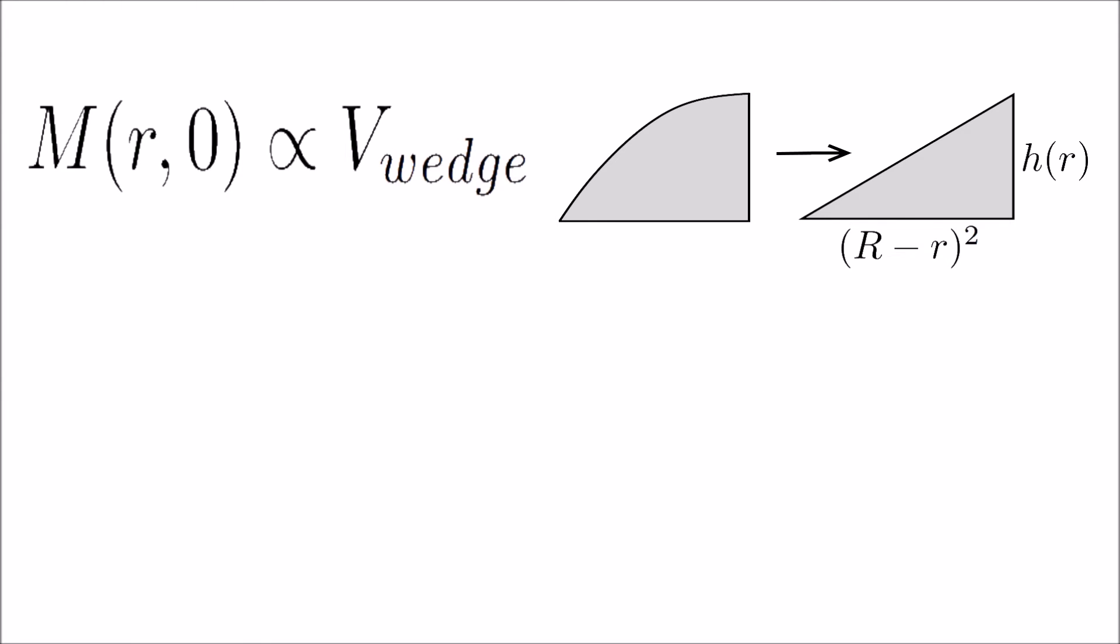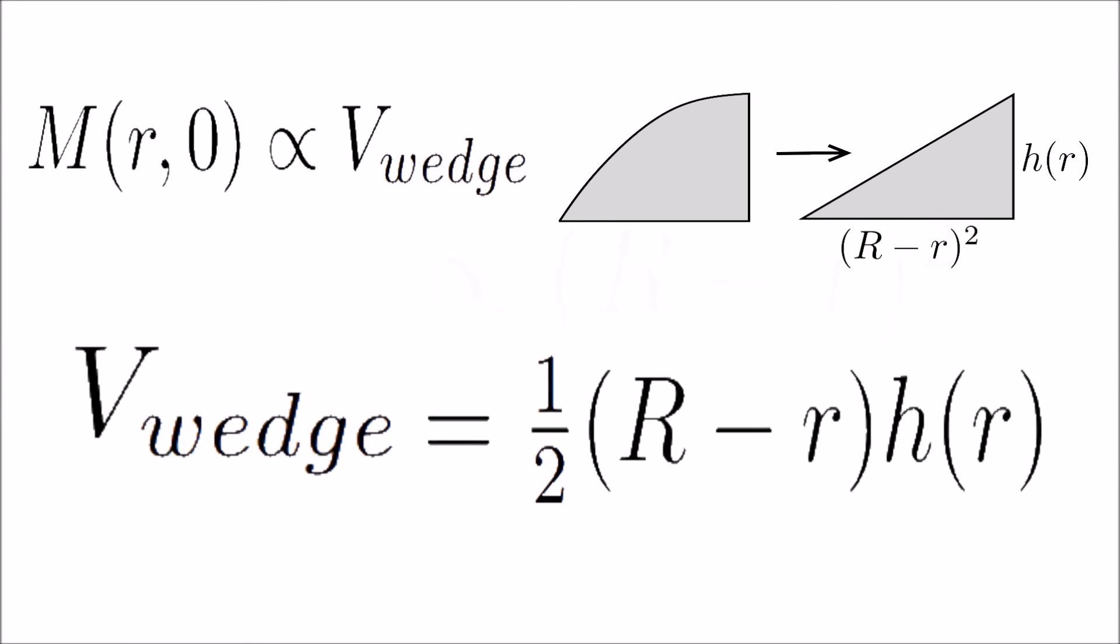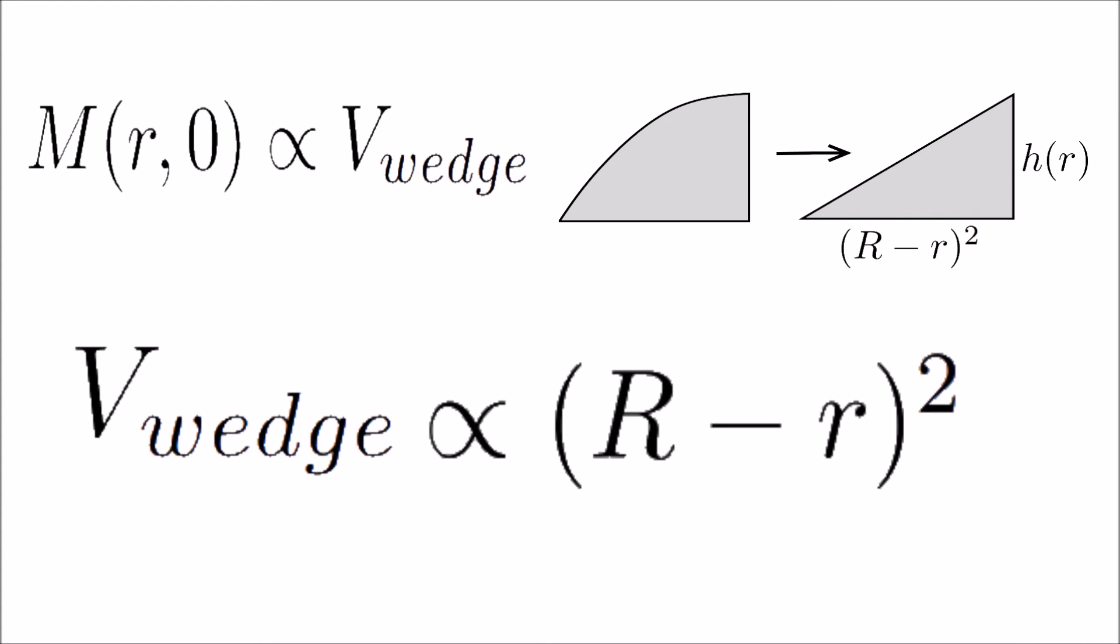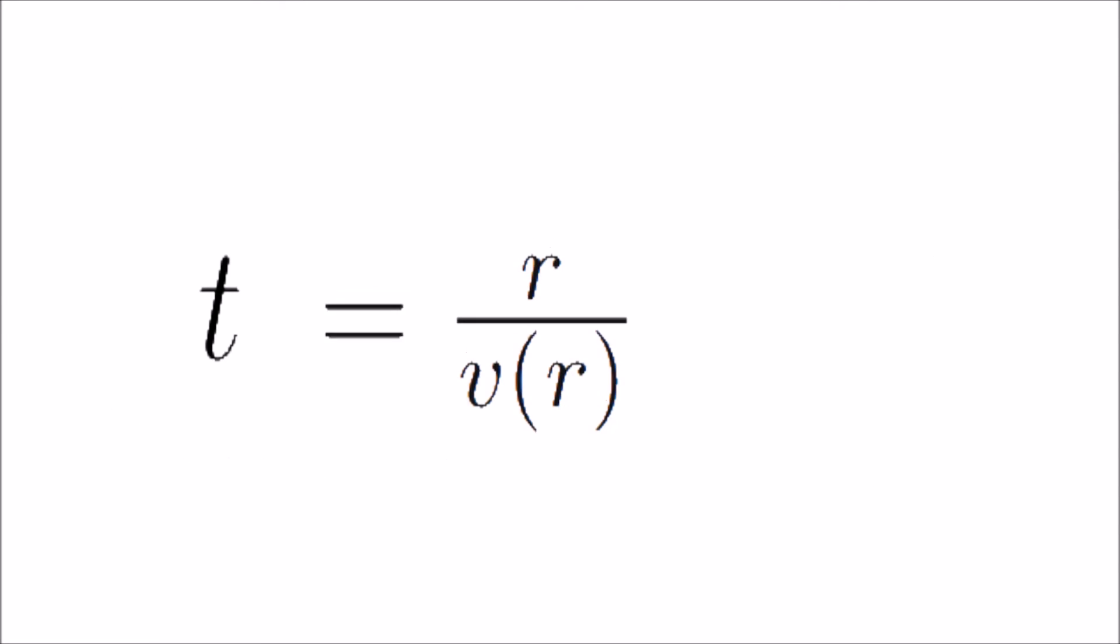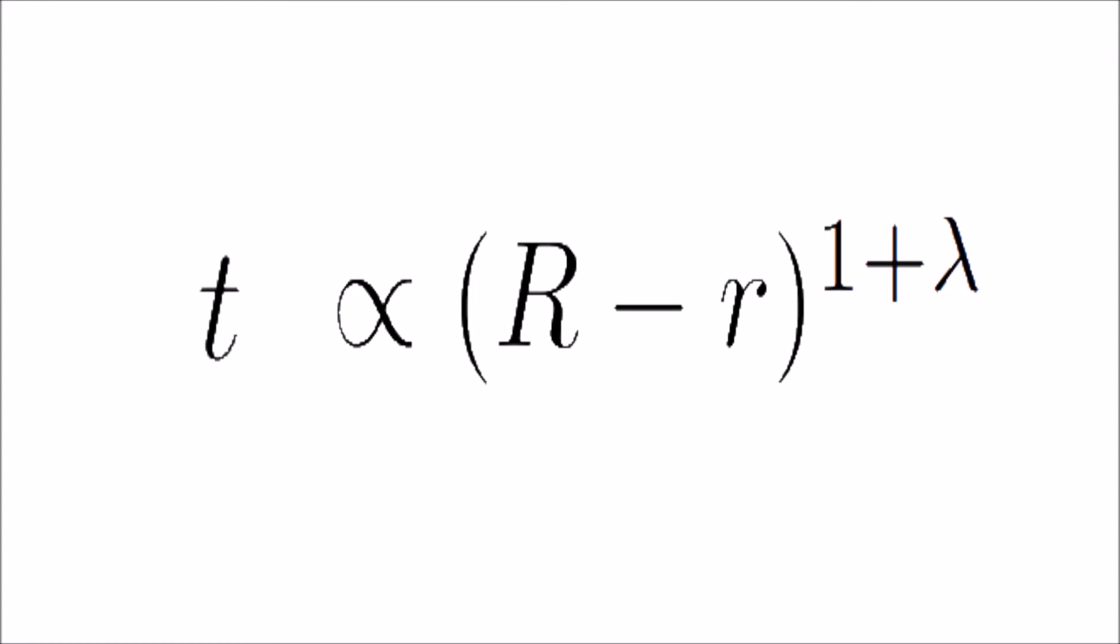The initial mass of the solute past the boundary is proportional to the volume of the wedge-shaped area. All of this mass will be moving towards the edge of the drop with the speed of the outward flow. The time it takes to get there is equal to the distance divided by the flow rate.